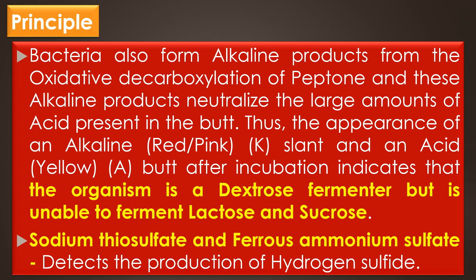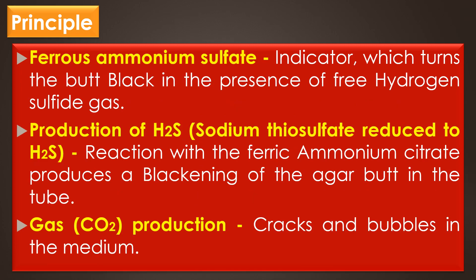Sodium thiosulfate and ferrous ammonium sulfate present in the medium detect the production of hydrogen sulfide. The ferrous ammonium sulfate serves as the indicator, which turns the butt black in the presence of free hydrogen sulfide gas. The production of hydrogen sulfide requires an acidic environment, and reaction with ferric ammonium citrate produces a blackening of the agar butt in the tube. Gas or CO2 production may also result and is seen as cracks and bubbles in the medium.